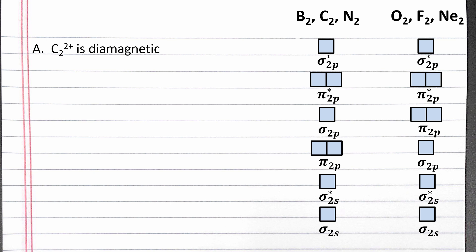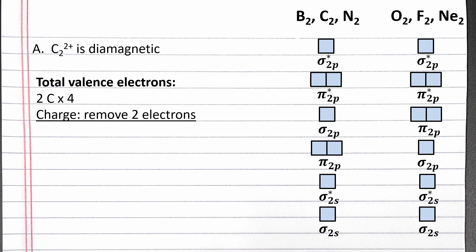The molecular orbital diagram shown only includes the second shell, so we're focusing on the valence electrons in the second shell. Each carbon has 4 valence electrons in the second shell based on its position in the periodic table, and we have 2 carbons. There is a 2+ charge, so we need to remove 2 of these valence electrons, for a total of 6 valence electrons. We add these 6 valence electrons to the molecular orbital diagram, starting with the lowest energy orbital, which is the σ2s bonding molecular orbital.